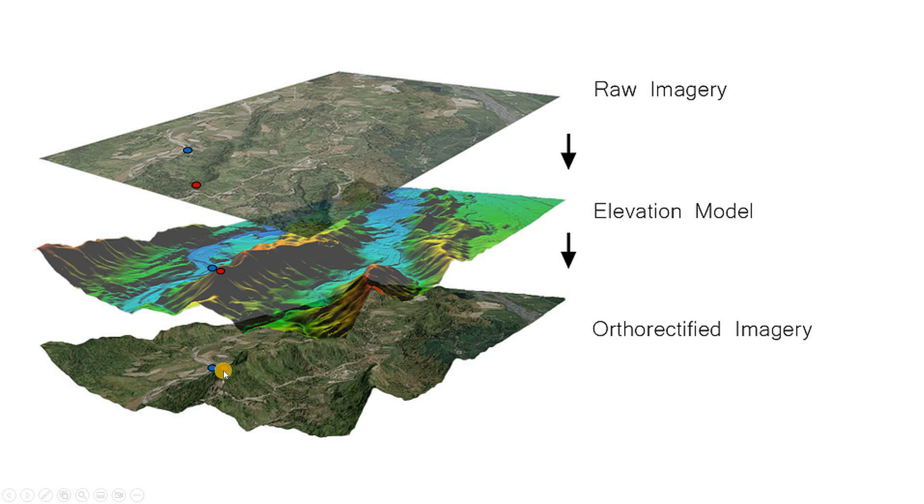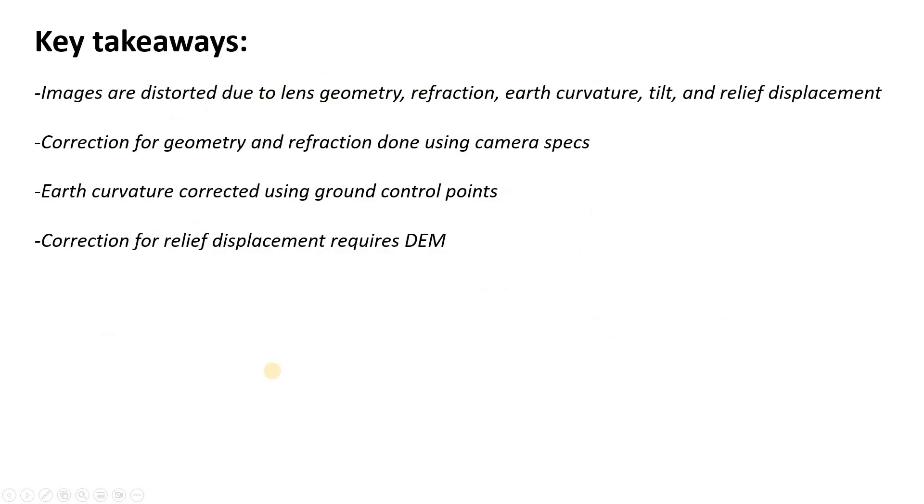When we orthorectify the image, we can see that the ridge line has essentially been moved closer to the point on the river. So to wrap this up, some key takeaways.